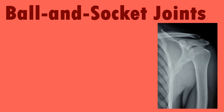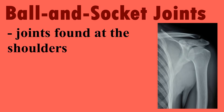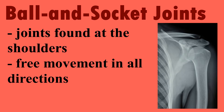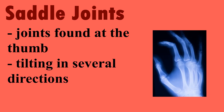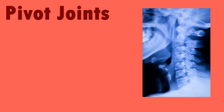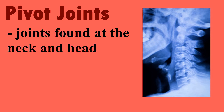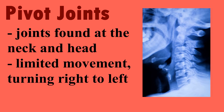Ball and socket joints are joints found at the shoulders, allowing free movement in all directions. Saddle joints are joints found at the thumb, tilting in several directions. Pivot joints are joints found at the neck and head, with limited movement turning right to left.